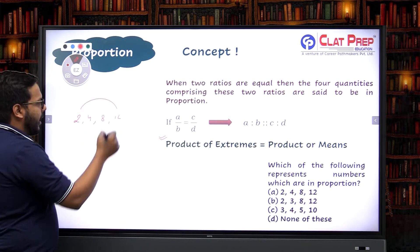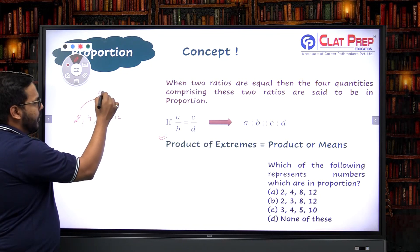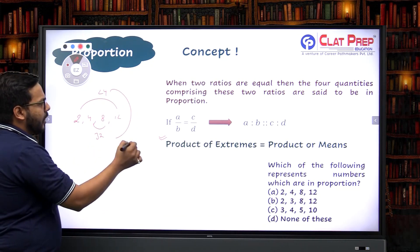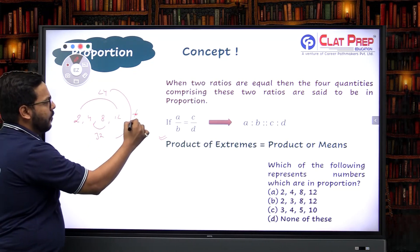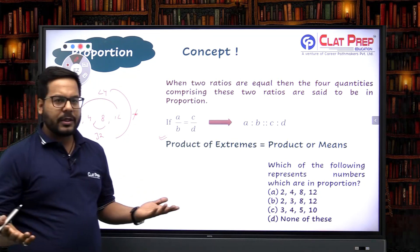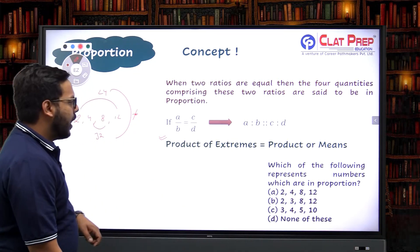Let's quickly multiply: 12 into 2 is 24, and 8 into 4 is 32. Is the product of extremes equal to the product of means? No, it is not. So these four numbers are not in proportion.